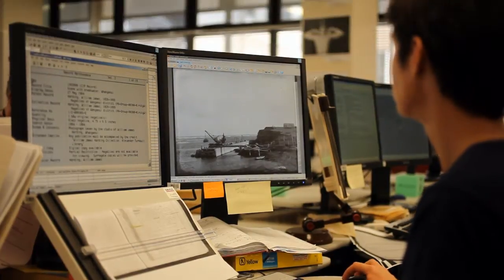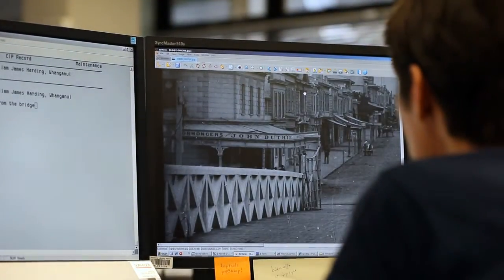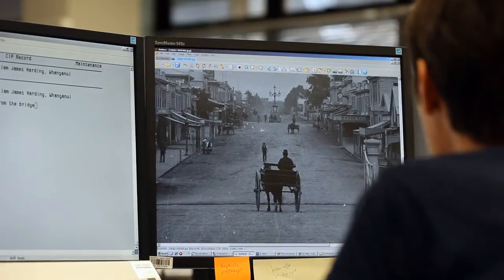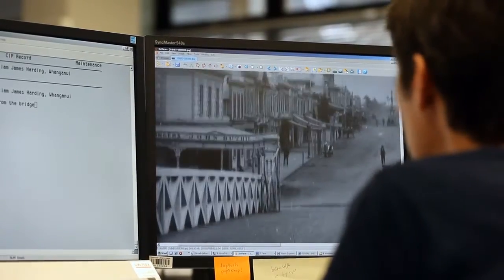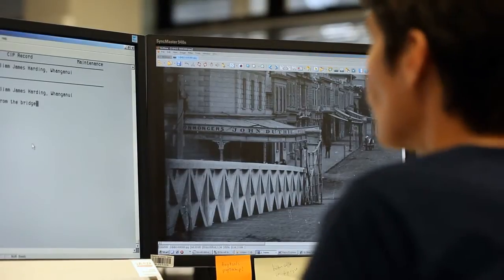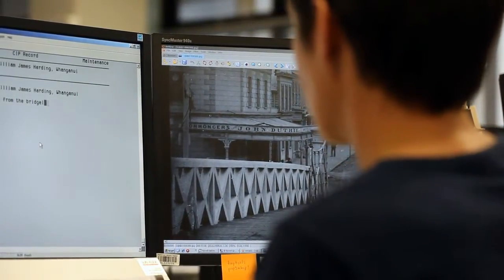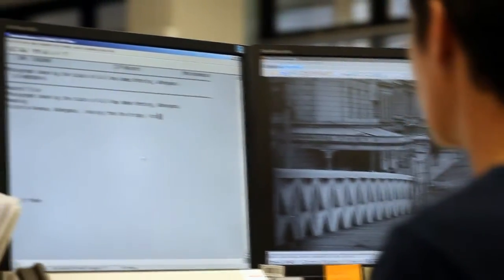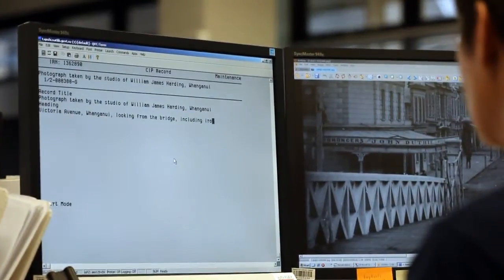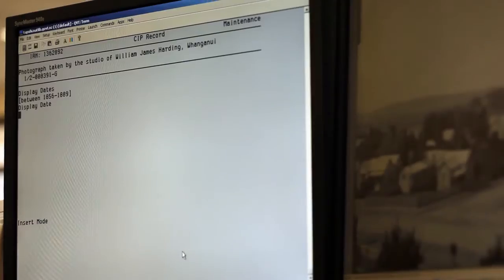All images are described briefly on the library's database tapui. Sets of records with pre-populated fields are made on tapui using templates. This staff member is adding to one of these records.